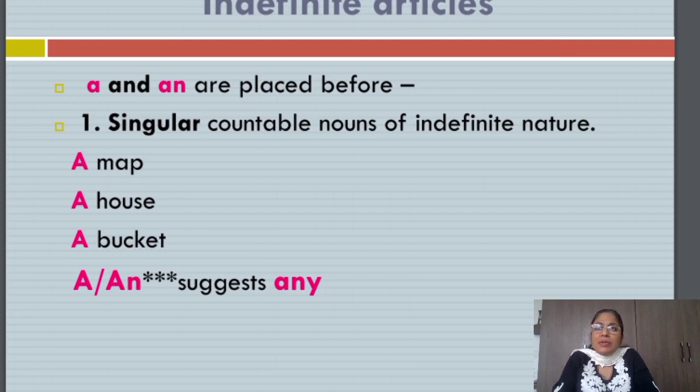Let me teach you indefinite articles. A and AN. The first difference has already been illustrated. A or AN are used according to the pronunciation of the word they are placed before, and the suggestion is any. The first usage is that they are placed before singular countable nouns of indefinite nature. Indefinite means not particular. Indefinite means any.